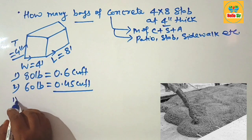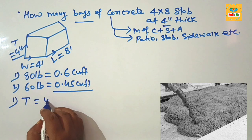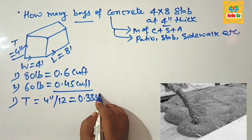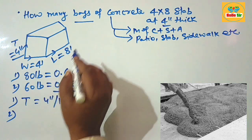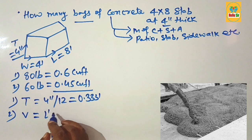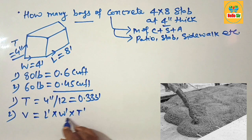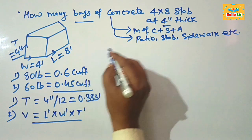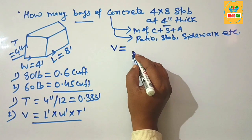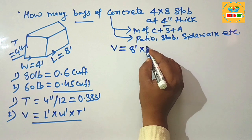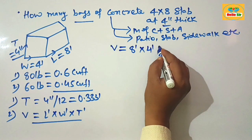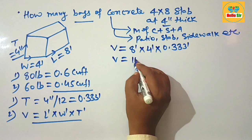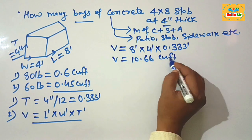To find out the total concrete volume, first convert the thickness from inches to feet by dividing by 12, which gives about 0.33 feet. The formula to calculate concrete volume in cubic feet is: length × width × thickness. Putting in the values — 8 feet × 4 feet × 0.33 feet — gives a total volume of about 10.66 cubic feet.